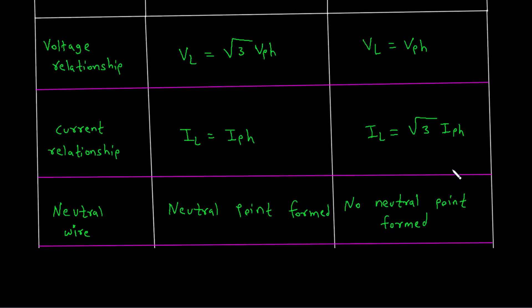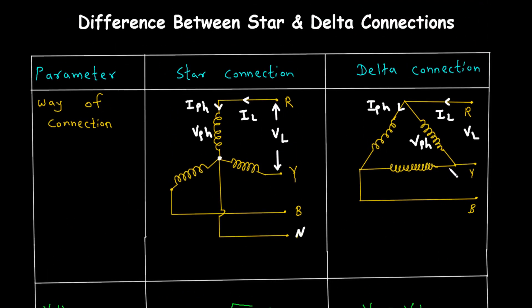Let's talk about where these connections are used. Star connections are commonly found in power distribution networks. The presence of a neutral wire makes it easier to manage unbalanced loads and provides a safety ground. This is especially useful for long-distance power transmission, as it allows for lower voltage levels per phase, reducing insulation requirements and energy loss.